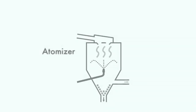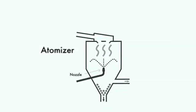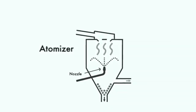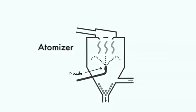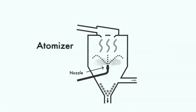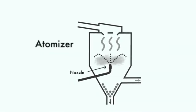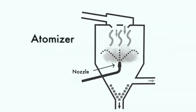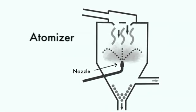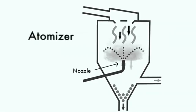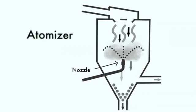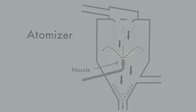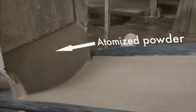The atomizer is equipped with a nozzle. The nozzle sprays the slurry into the middle of a large tank that is fed with a current of hot air. As the slurry becomes airborne, it rapidly dries to form atomized powder.